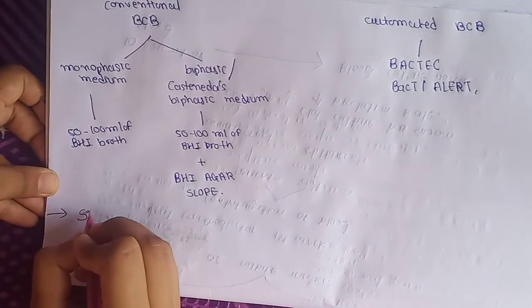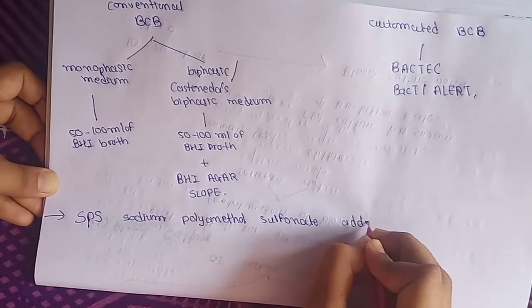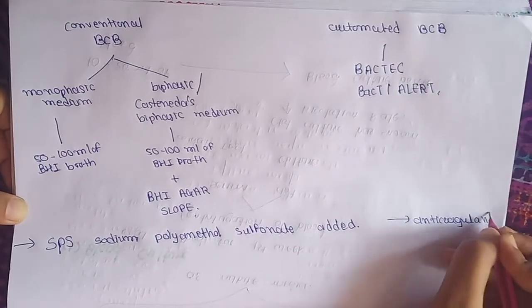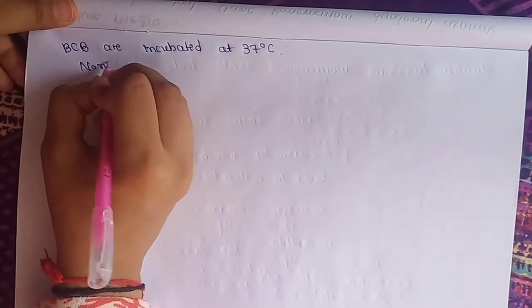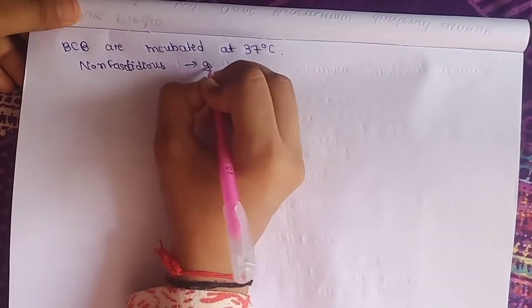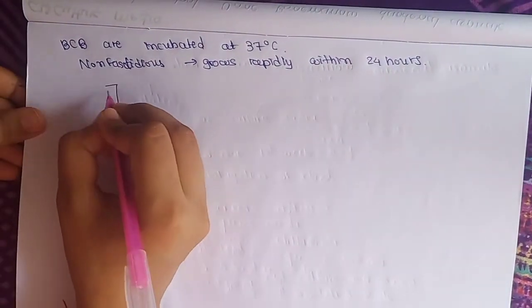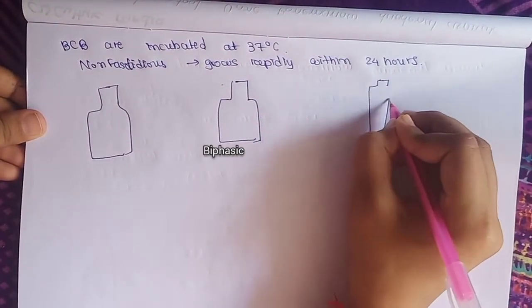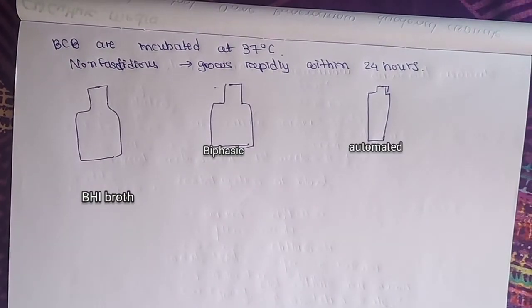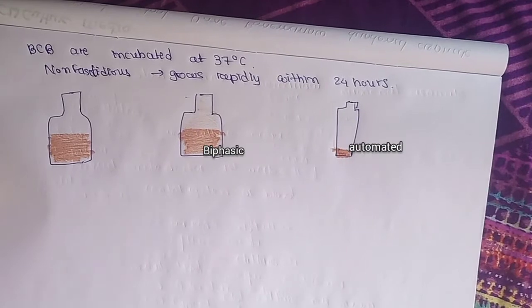Sodium polyanethol sulfonate (SPS) is added as an anticoagulant, and it also counteracts the bactericidal activity of blood. After injecting blood into blood culture bottles, the bottles are incubated at 37°C. Since Salmonella typhi is non-fastidious, it grows rapidly within 24 hours. Growth can be observed in the monophasic blood culture bottle, the biphasic Castaneda's medium (growth on agar), and the automated system.